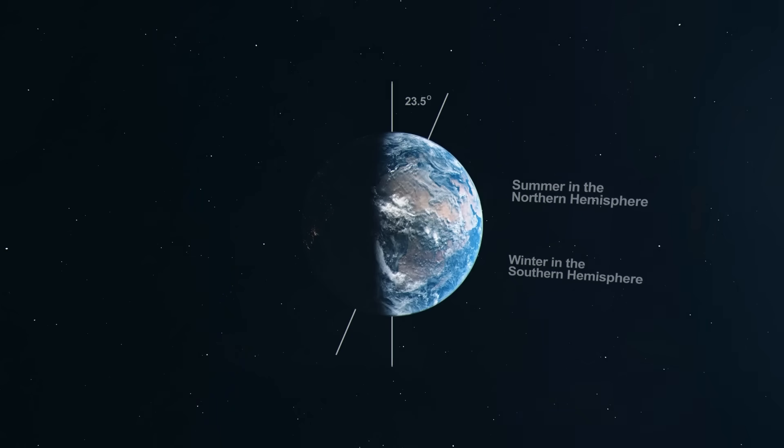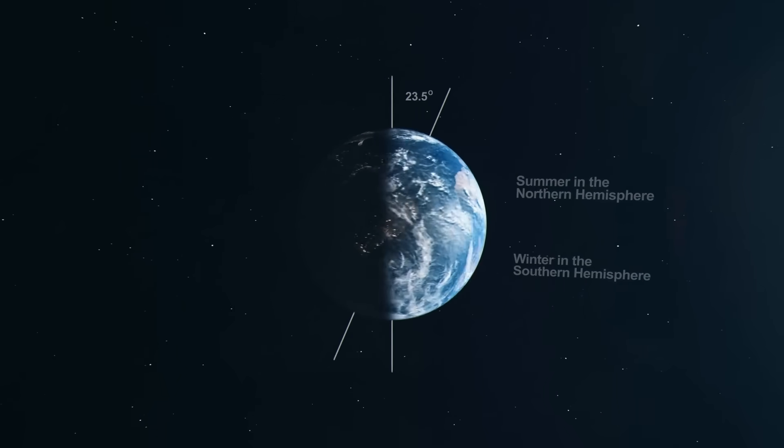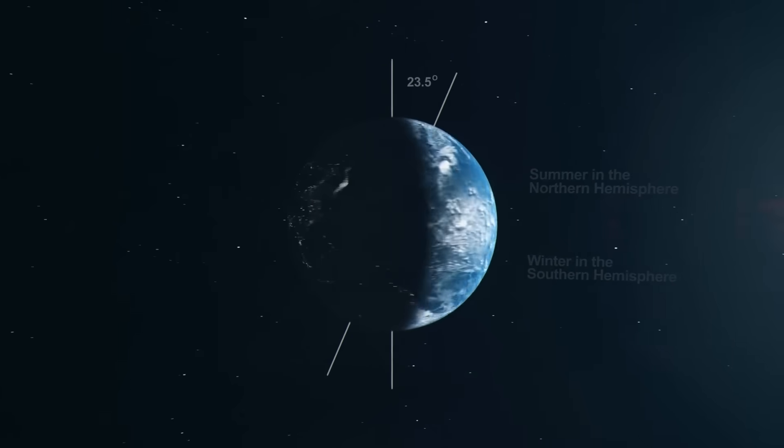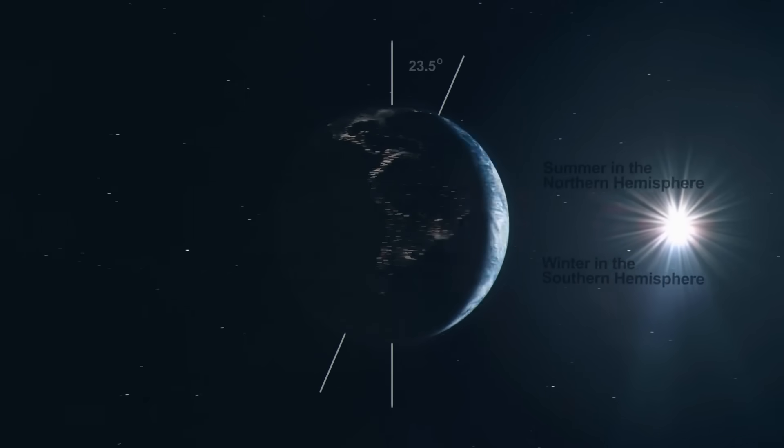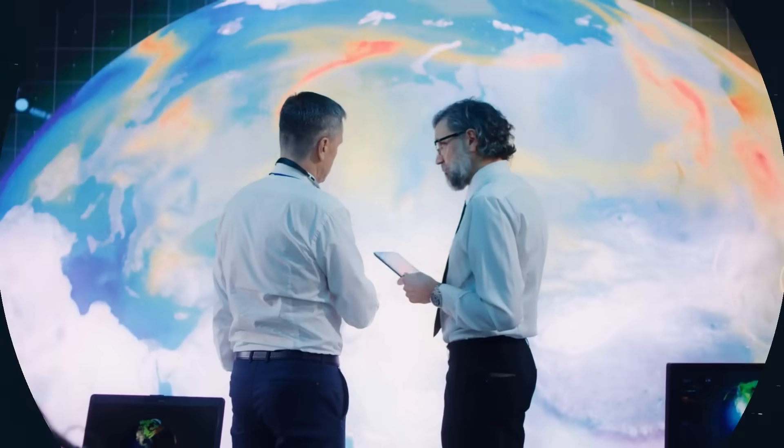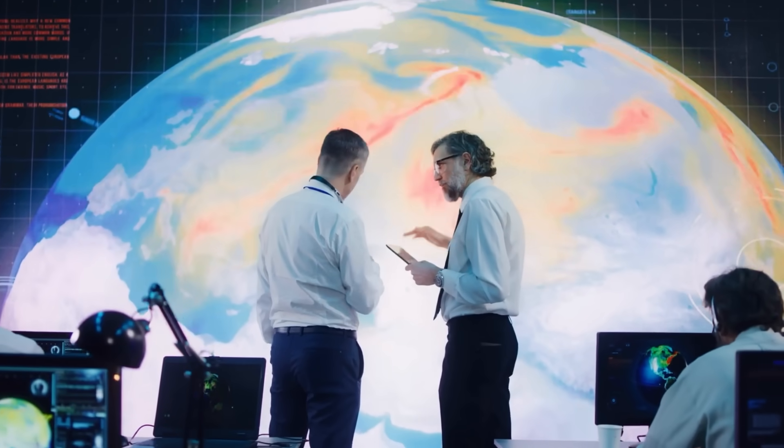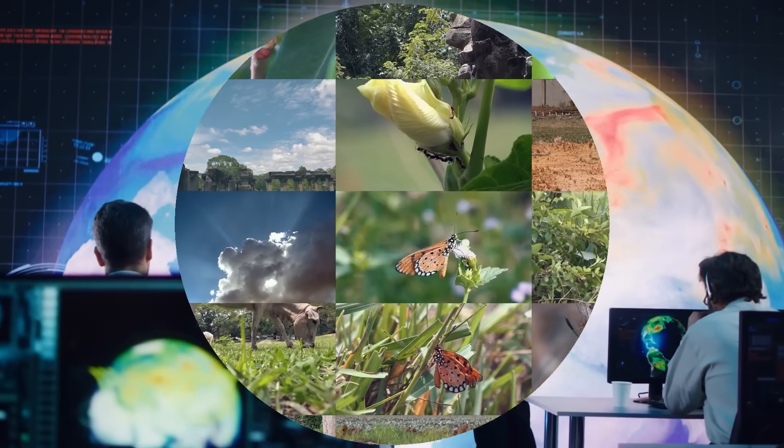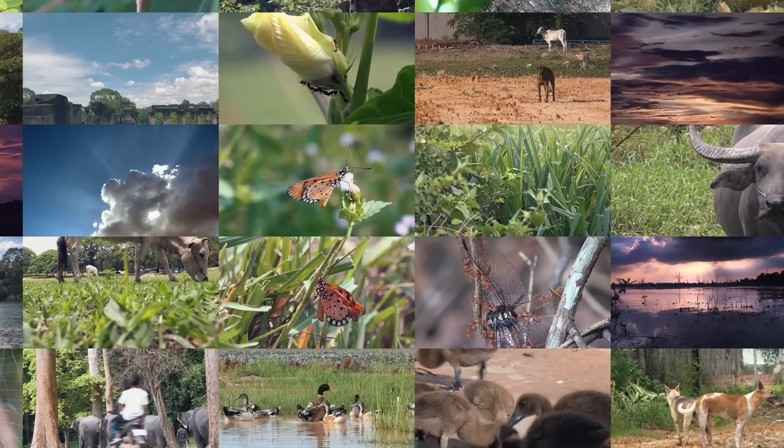This is when the northern hemisphere is tilted furthest towards the sun and is considered the first day of summer. Why do we have these solstices? As shown in this animation, it's because the earth happens to have an axial tilt of about 23.5 degrees. While this tilt is responsible for shaping our planet's climate and seasons, it also played a crucial role in shaping life on earth.